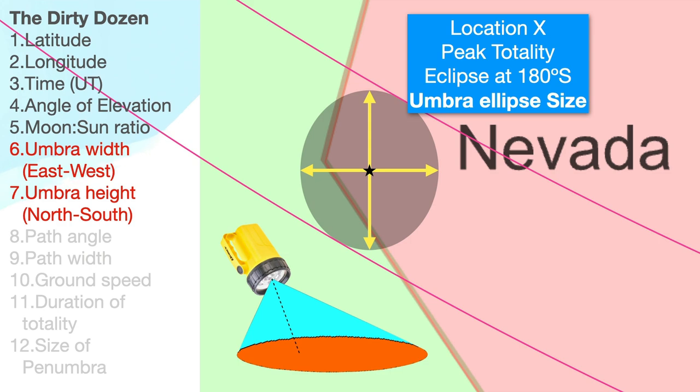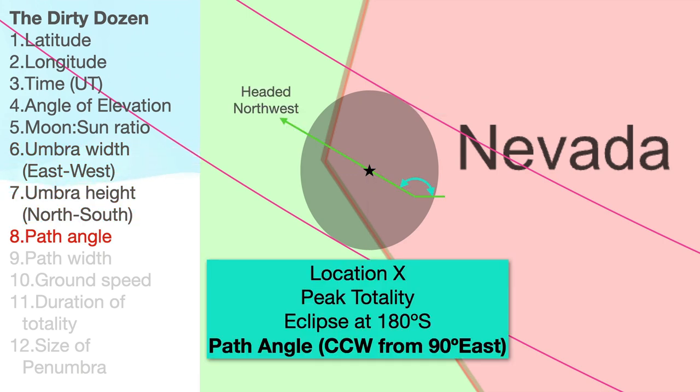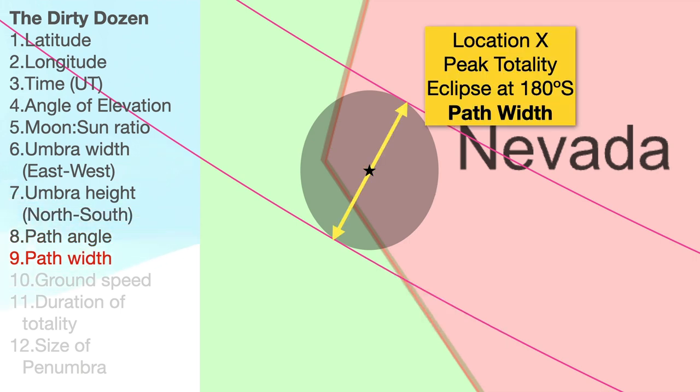How wide is the umbra, measured east to west? Being that the moon's shadow is circular, but the eclipse is not at the observer's zenith, the circle will turn into an oval. So, the next question is, how tall is the umbra, measured north to south? What's the path angle of the umbra, measured counterclockwise from due east? In this fake example, the eclipse is headed northwest, but you'll have to figure out the true angle. What's the path width of the umbra? In other words, how wide a swath of countryside is the umbra cutting at the moment it crosses location X's meridian?